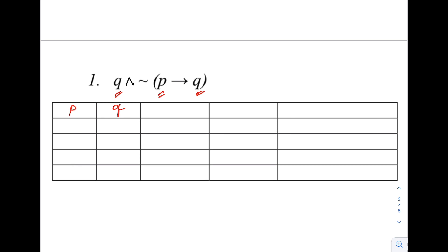This is the standard pattern we always use for the first two columns. Next, checking the given expression, as you notice we have three operators: the first is conjunction, the second is negation, and the last operator is the conditional proposition. Our next move is to first evaluate the truth value of what is inside the parentheses, which is 'if P, then Q'.